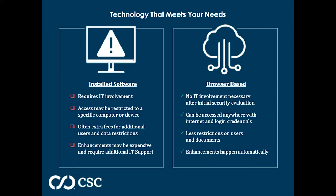The next slide distinguishes between the two common approaches employed by matter management providers. Fundamentally, there are two options: installed software and browser-based software. Installed software is often referred to as on-premises deployment. Browser-based is also known as cloud-based software or software as a service — SaaS.